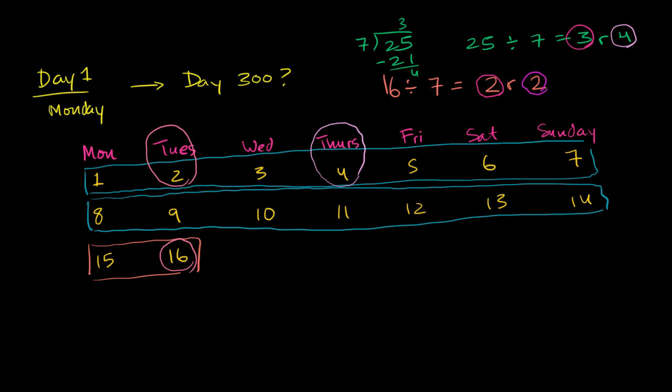So let's go to 17, 18, 19, 20, 21, 22, 23, 24, and 25. It is indeed a Thursday, and it makes complete sense. You have three rows of 7 before the row that gets to 25. And then in that row, it's the fourth entry because you have a remainder of 4. One, two, three, four. It's a Thursday.